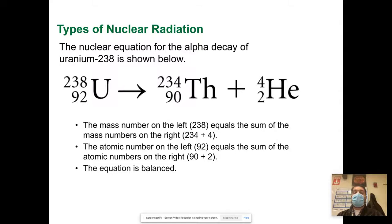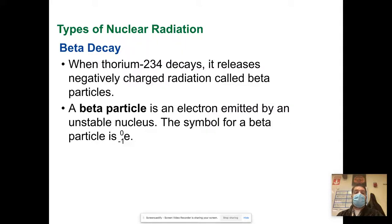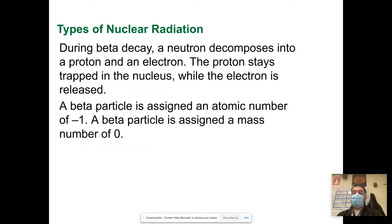Then beta decay. When thorium decays, it releases a negatively charged radiation called a beta particle. A beta particle is an electron emitted by an unstable nucleus, so electrons can just float around, and when they do we call those a beta particle. The symbol for that is listed on the screen here. During beta decay, the neutron decomposes into a proton and an electron.